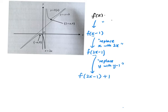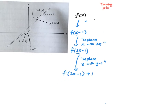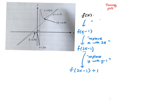How does this affect all the key features? For the turning point — the turning point originally was 3 plus a, comma 6, and negative a, comma 0 for the other point. The asymptotes originally were y equals x plus b, and x equals 2a. This is all from f(x).